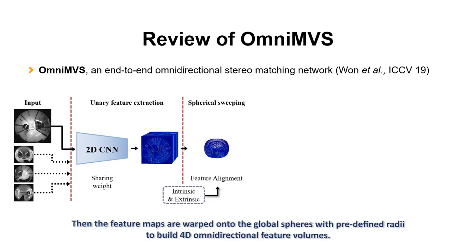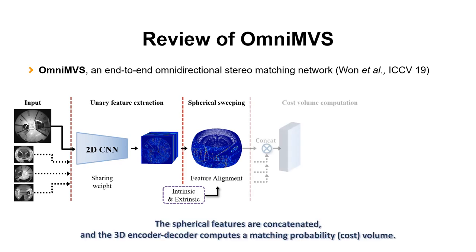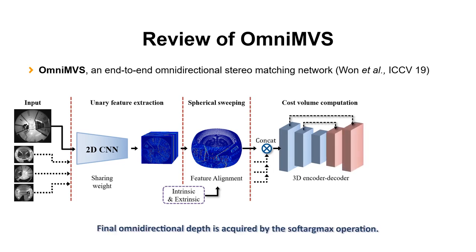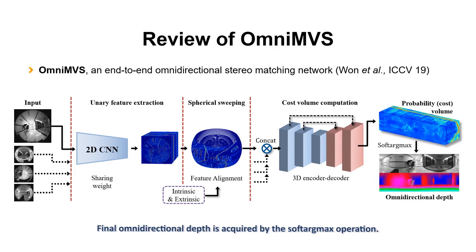Then the feature maps are warped onto the global spheres with pre-defined radii to build 4D omnidirectional feature volumes. The spherical features are concatenated, and the 3D encoder decoder computes a matching probability volume. The final omnidirectional depth is acquired by the soft argmax operation.